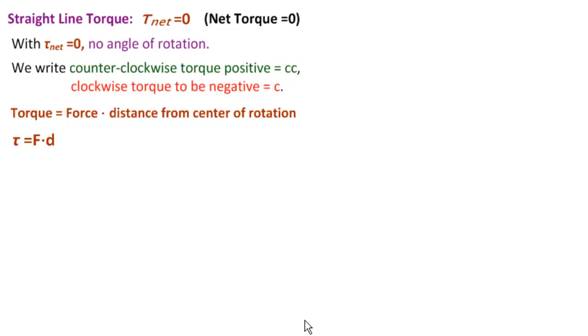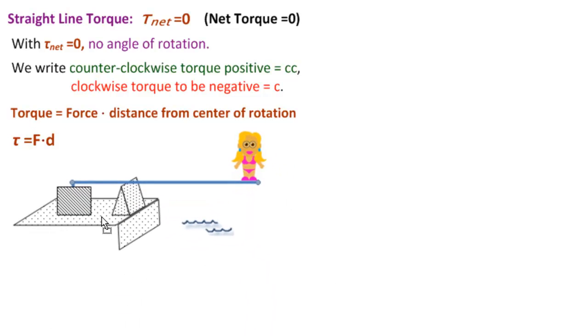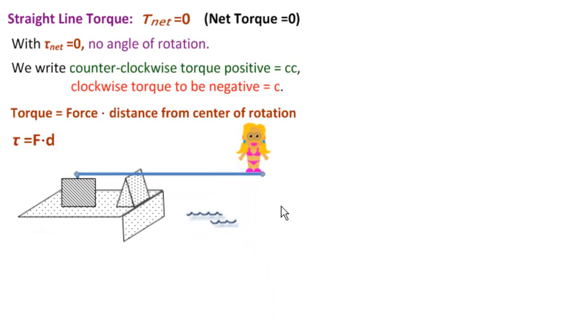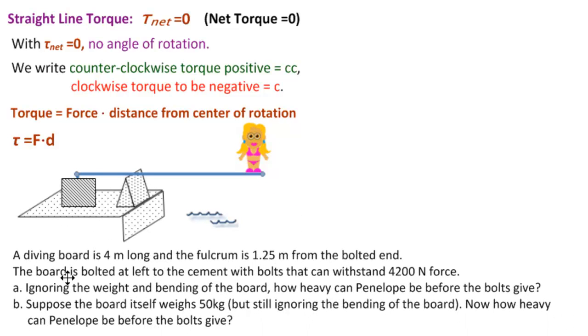What is a typical problem for torque? A very typical, easy problem for torque is the diving board problem. Here is the description. A diving board is 4 meters long and the fulcrum is 1.25 meters from the bolted end.